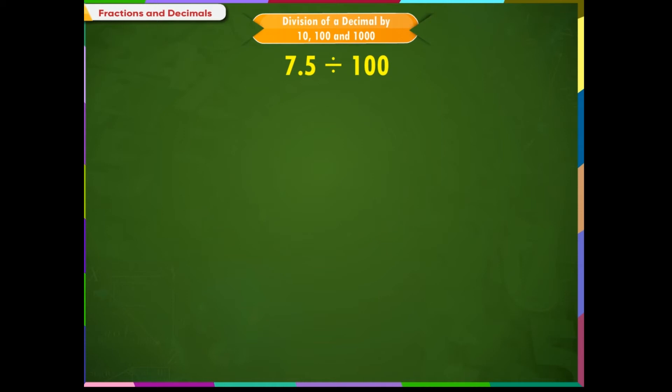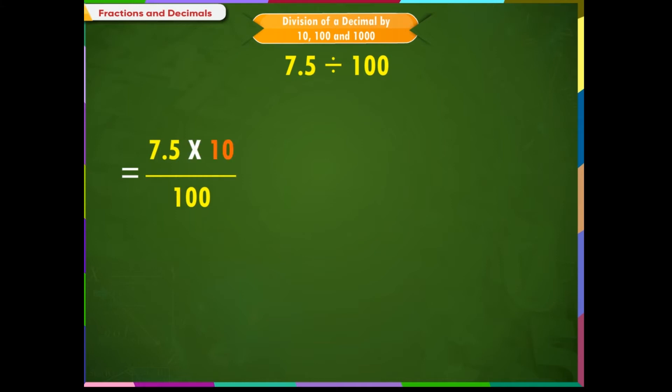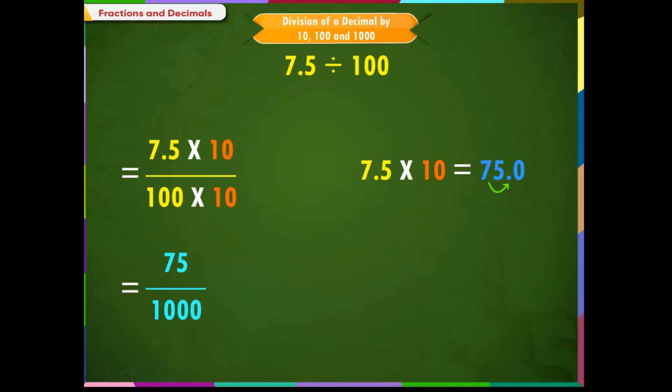Next example: divide 7.5 by 100. Look at the number of decimal places in the dividend. In this problem also, since the number of decimal places is 1, we will multiply the numerator and denominator by 10. Therefore, 7.5 × 10 divided by 10 × 10. We know that while multiplying a decimal number with 10, we shift the decimal point one place towards the right. Thus, we get 75 divided by 1000.